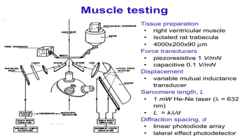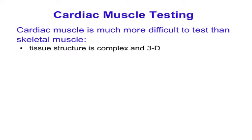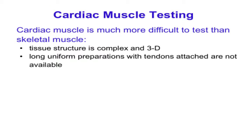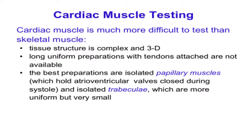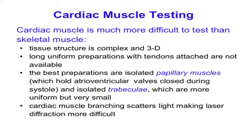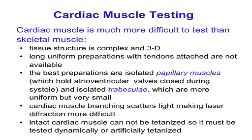The main message is that measuring sarcomere length in cardiac muscle is possible but much harder than in skeletal muscle. You need to go to a lot more trouble to get a nice preparation, attach it, measure forces, and measure sarcomere lengths. The tissue structure is more complex and three-dimensional; you don't have long uniform preparations with tendons at each end. Cardiac muscle branching scatters the light making laser diffraction more difficult but not impossible.